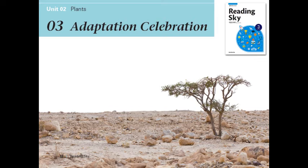For example, a cactus grows large, spiny thorns to store water and protect its stem from animals. Lily pads, on the other hand, grow broad, flat leaves that allow them to float on the water's surface. Without these adaptations, plants would have a hard time surviving in their unique environments.